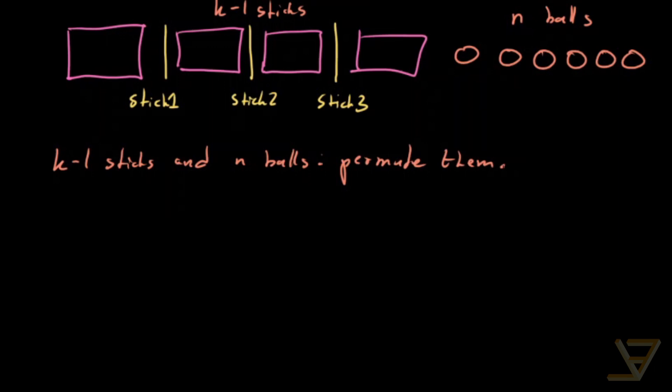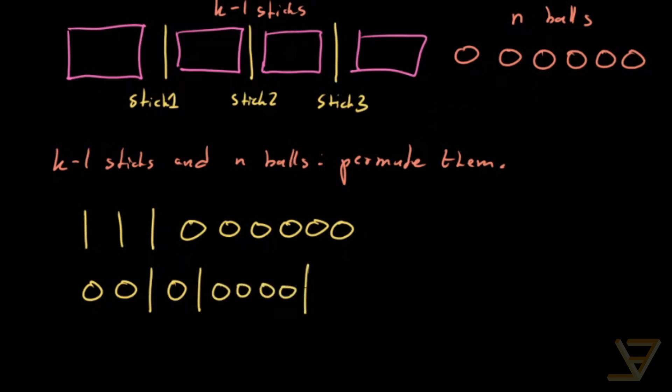The reason is as follows. We actually have a bijection. We've got 1, 2, 3 sticks, and 1, 2, 3, 4, 5, 6 balls. So a permutation looks something like this: 1, 2, stick, 1, stick, 1, 2, 3, stick. Let's remove one of those.